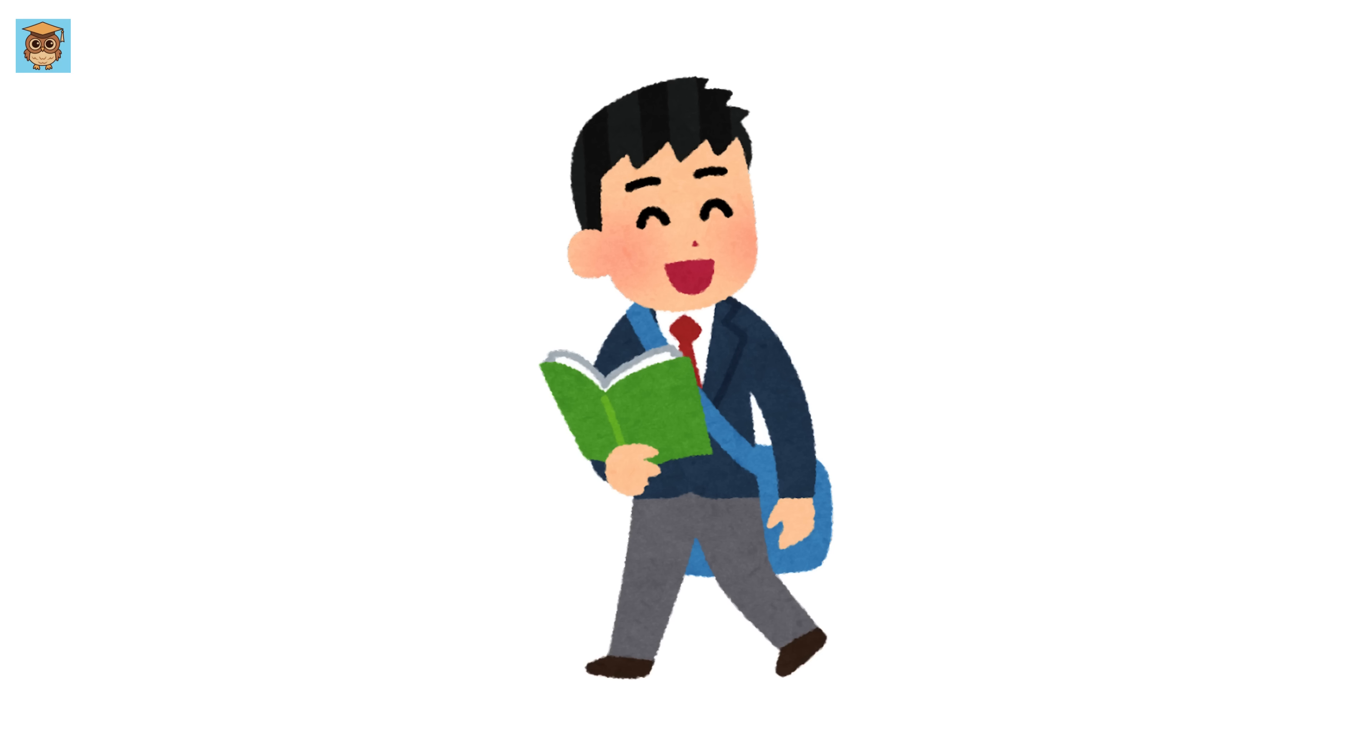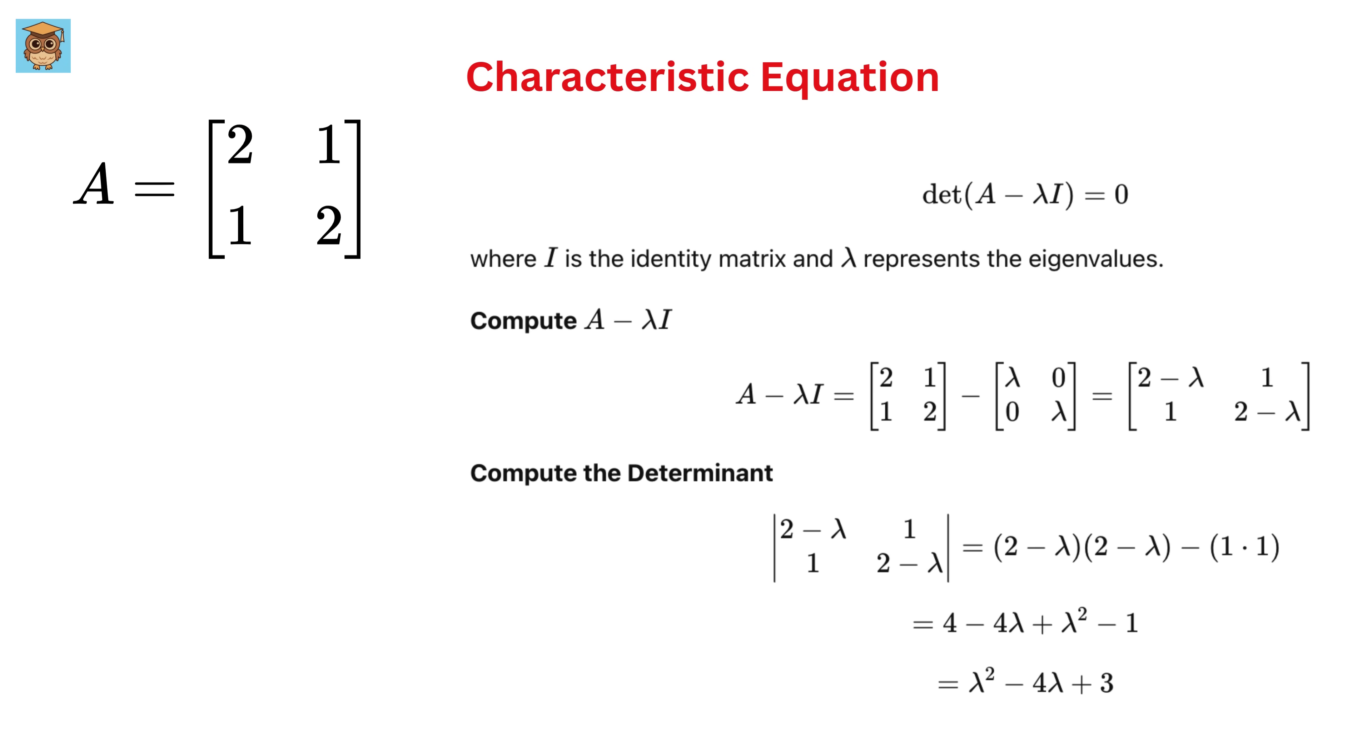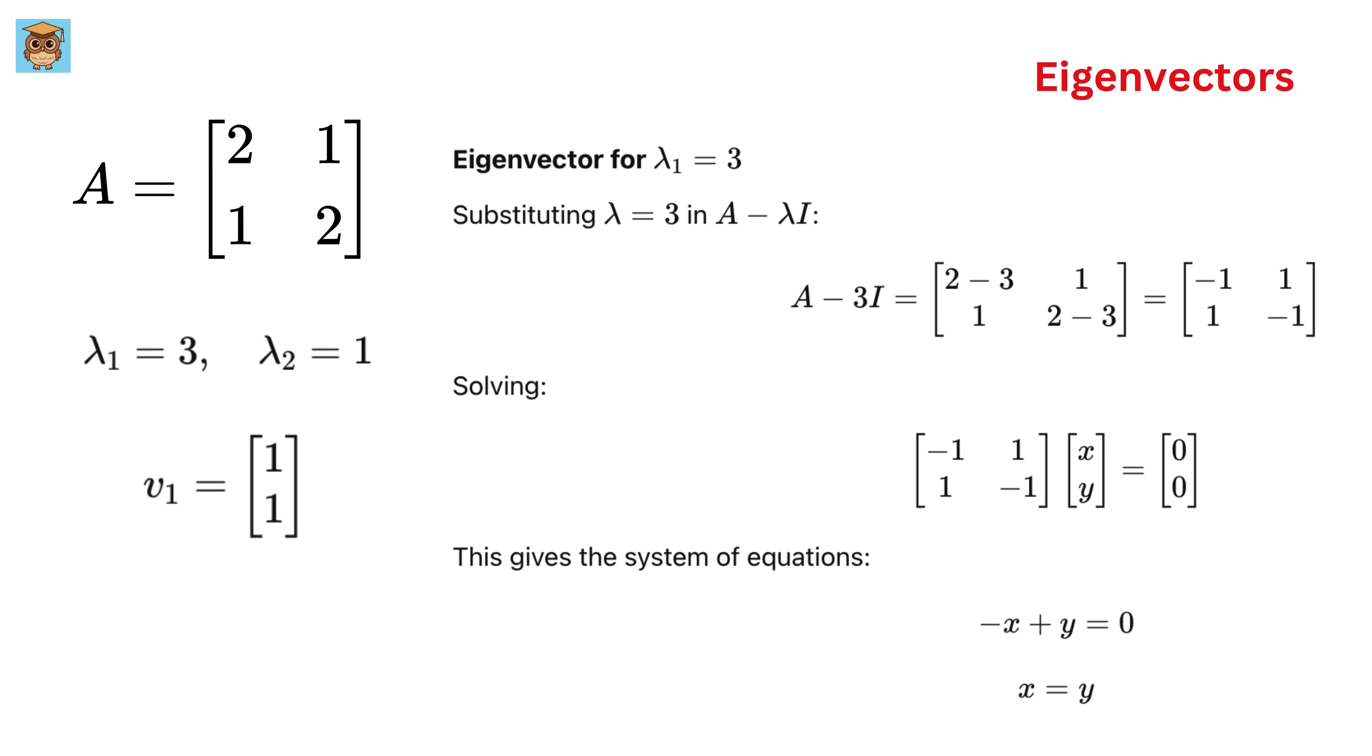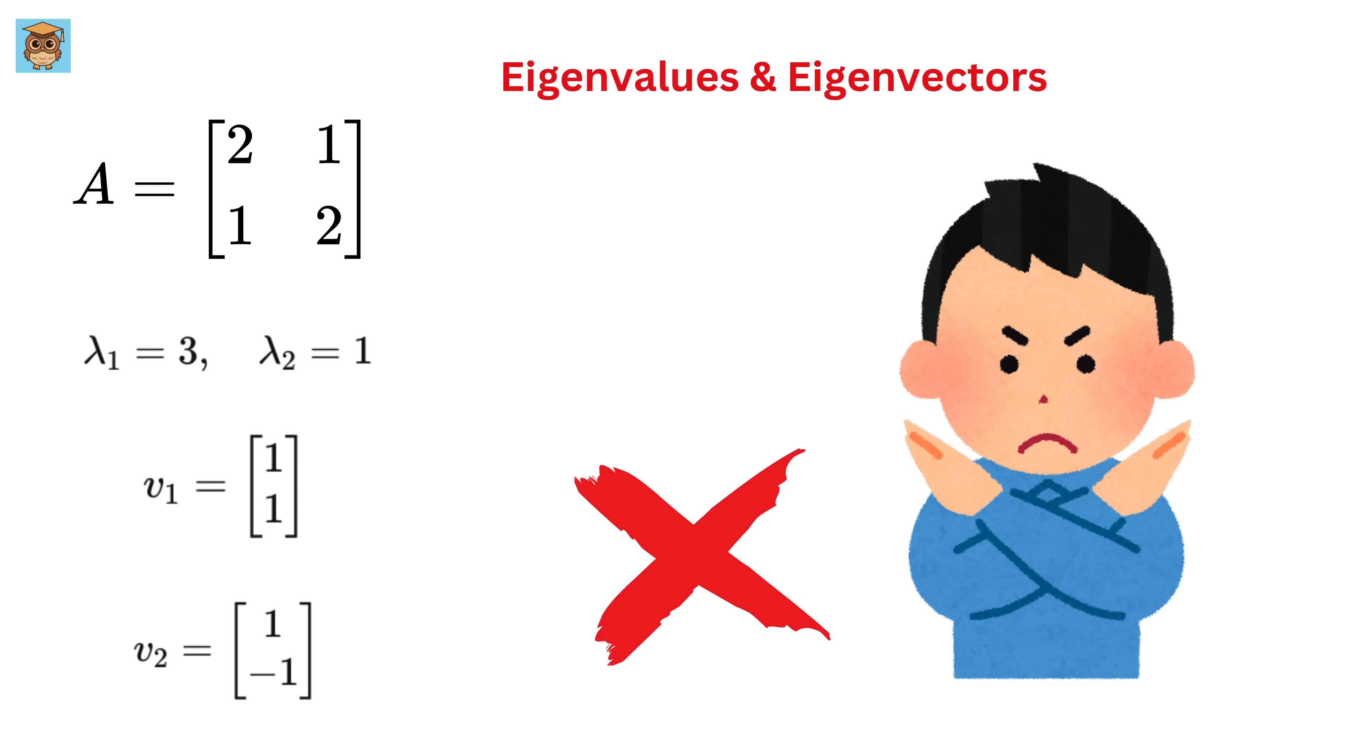In high school math, we've always been told that if you're given a matrix, say this A matrix, just make a characteristic equation out of it, and that will help you find what we call eigenvalues of that matrix A. And then, for each eigenvalue, just solve this equation to get eigenvectors. But we have never been taught what these eigenvalues and eigenvectors actually represent in the real world.